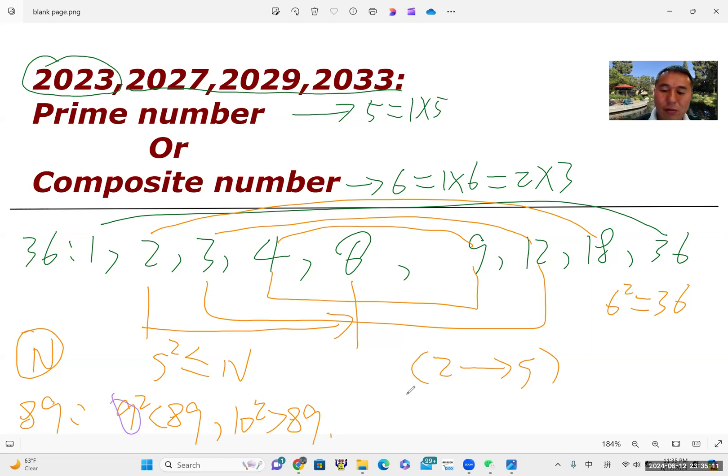We just need to go through two, three, four, five, six, seven, eight, nine. Yeah, just stop at nine. We don't need to go to 10 or even bigger.